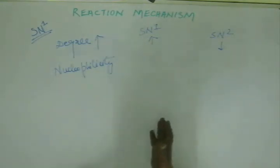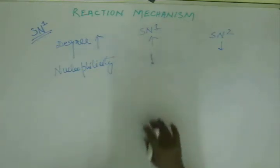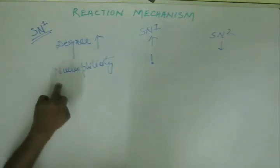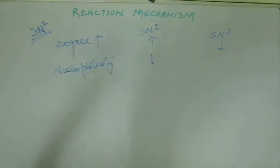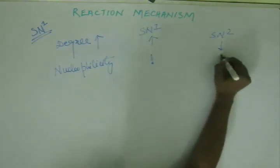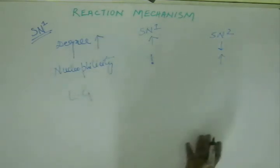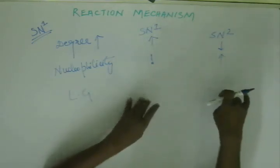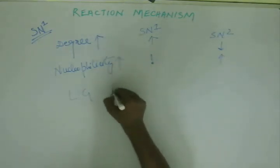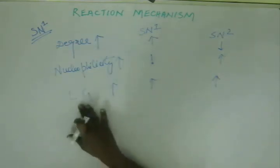Since in SN1 the nucleophile is not present in the RDS, altering nucleophilicity does not change the rate via the SN1 mechanism. But in SN2 the nucleophile is involved in the RDS, so increasing nucleophilicity speeds up that step and increases the overall rate. For leaving group: the substrate is present in the RDS of both reactions, and the leaving group departs in both RDS steps. Therefore, if leaving ability increases, both SN1 and SN2 rates increase.